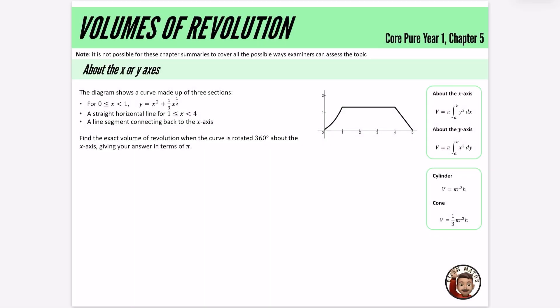We are continuing with the Further Maths chapter summaries and we are on to volumes of revolution. It's worth noting that this is for year one, so all of the functions are going to be pretty straightforward, nothing too complex for these ones. It's not possible for these chapter summaries to cover all of the ways that it can be assessed in the exam. This is just here for quick revision — make sure you are doing proper exam questions to get yourselves prepared for the real thing.